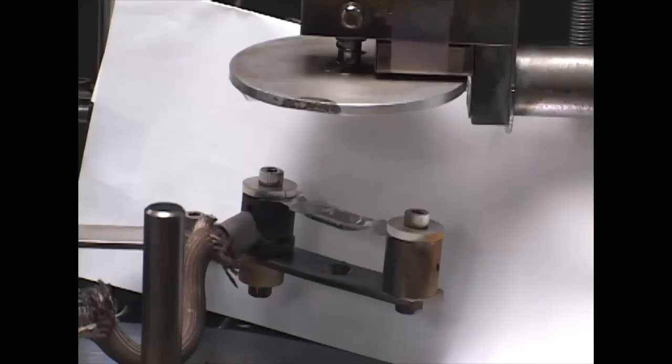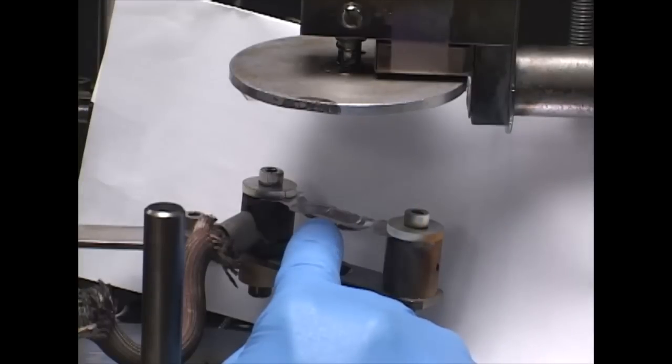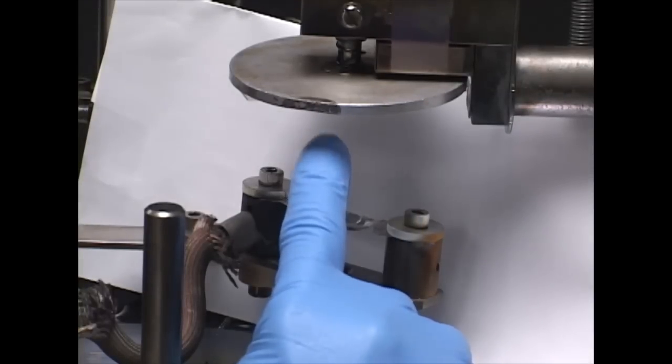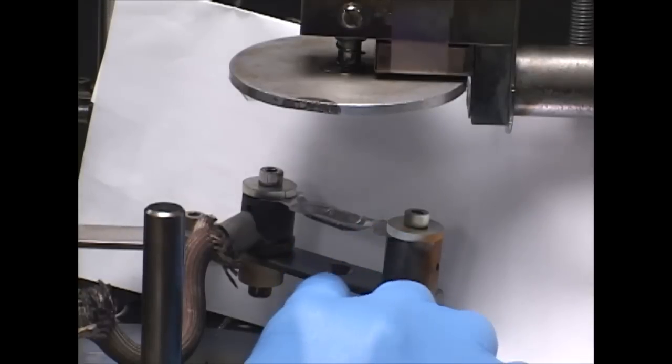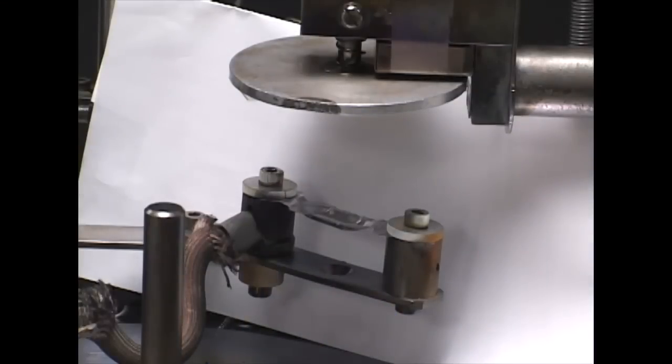During our deposition the current will flow from this port to this port through the boat and it will heat up the silver, allowing it to deposit onto the substrate. And then it will continue the circle going to the other side. Between this port and this piece of metal we have a ceramic that prevents it from having a shortcut.